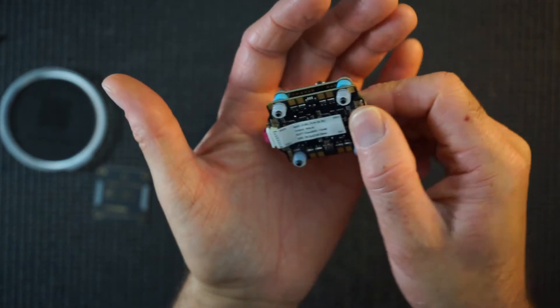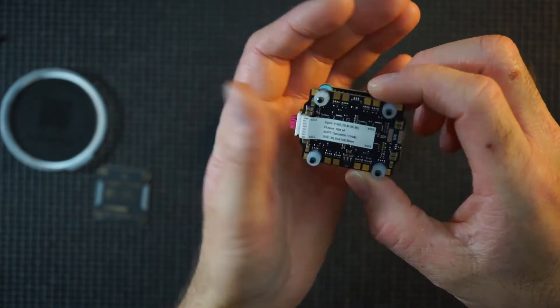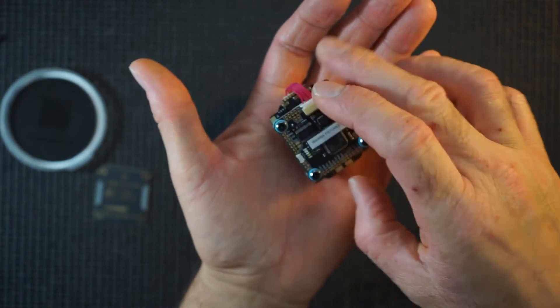This is four to six S, so it does everything needed. ESCs these days are pretty good. DShot 600 on that.